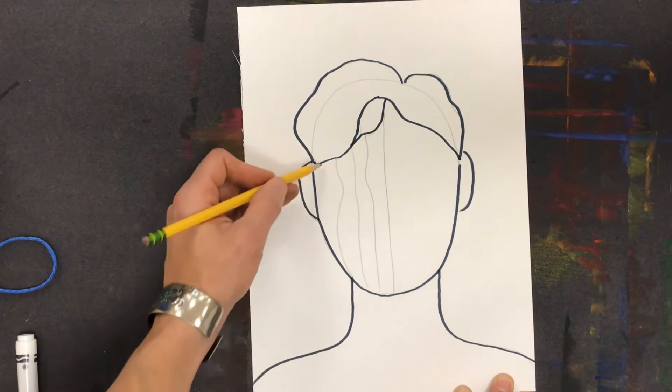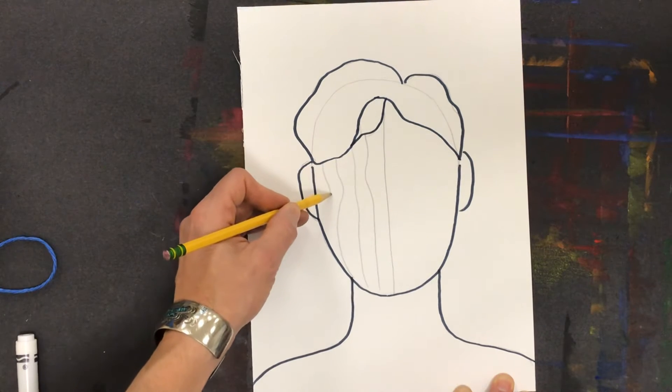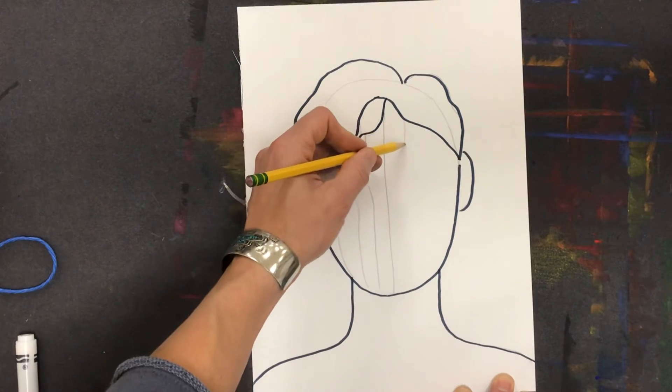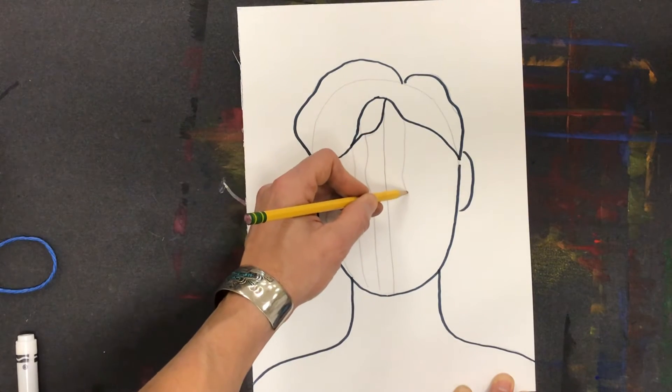This is where the line starts to move and describe the shape of their face. In towards their eye, out over their cheek. I'm going to do the same thing on the other side. Towards the eye, out on the cheek.